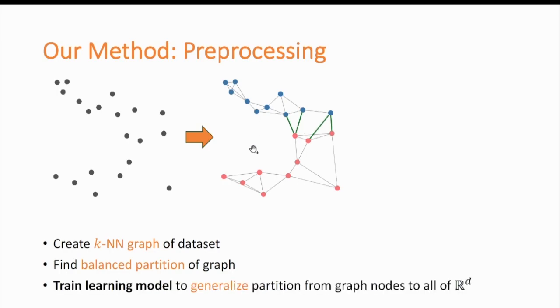Then, we train a learning component on the graph nodes with those blue and red colors as their labels in order to generalize the partition from the graph nodes to all of Rd. For example, here, the learning component may learn this purple hyperplane as the partition.